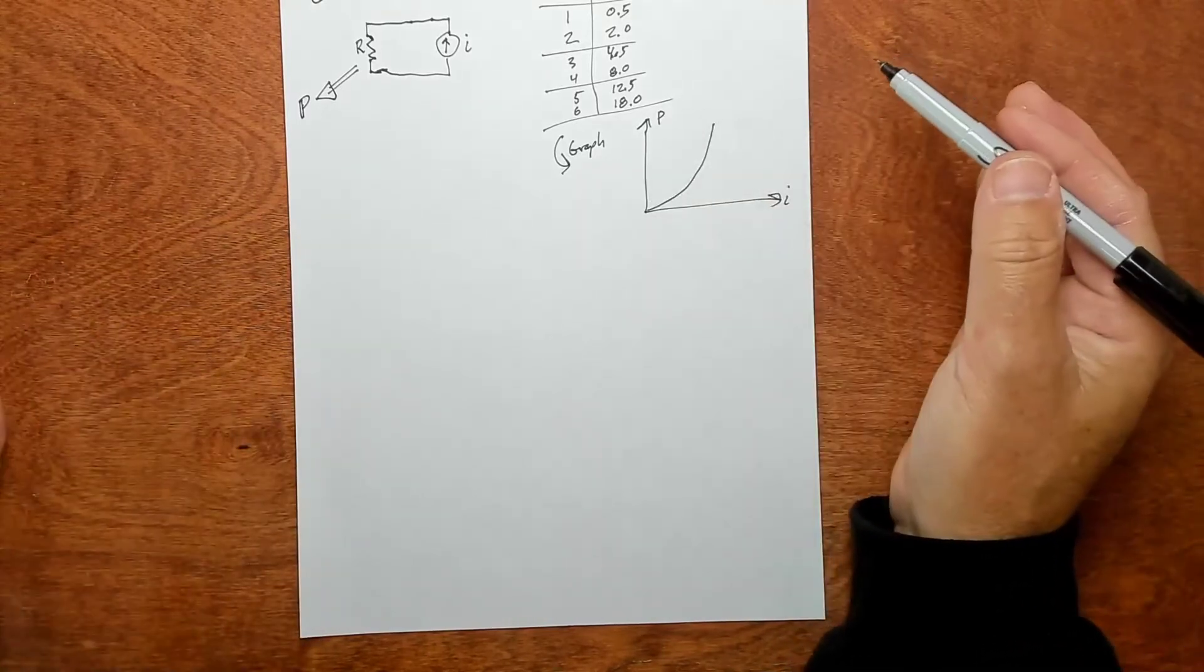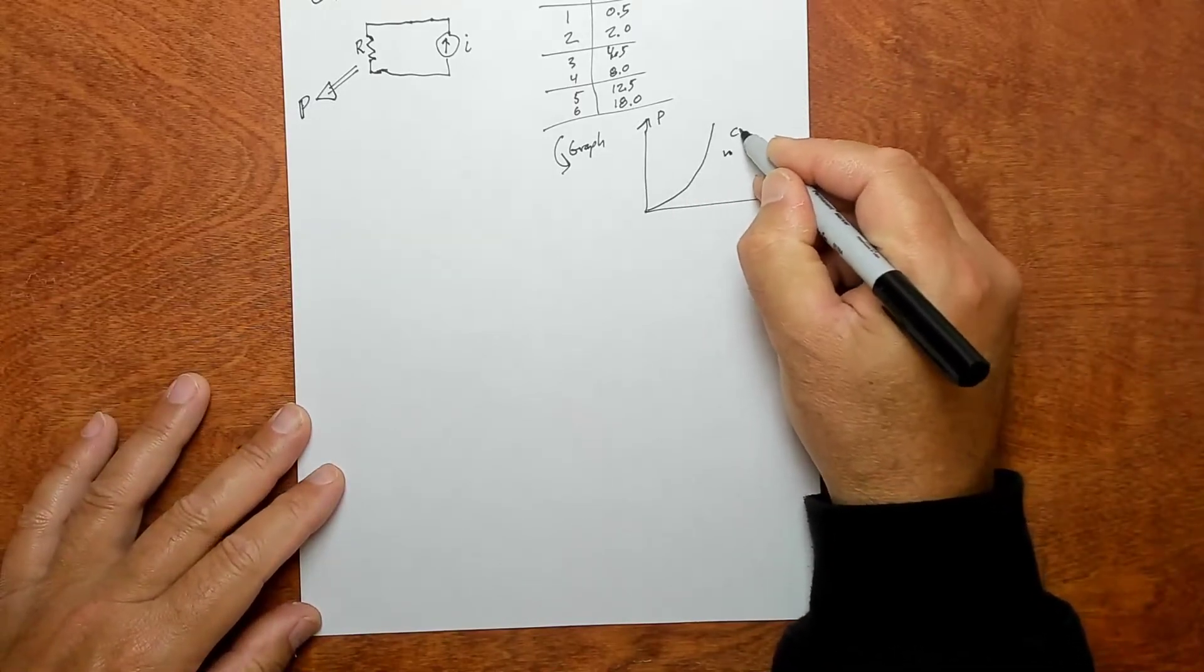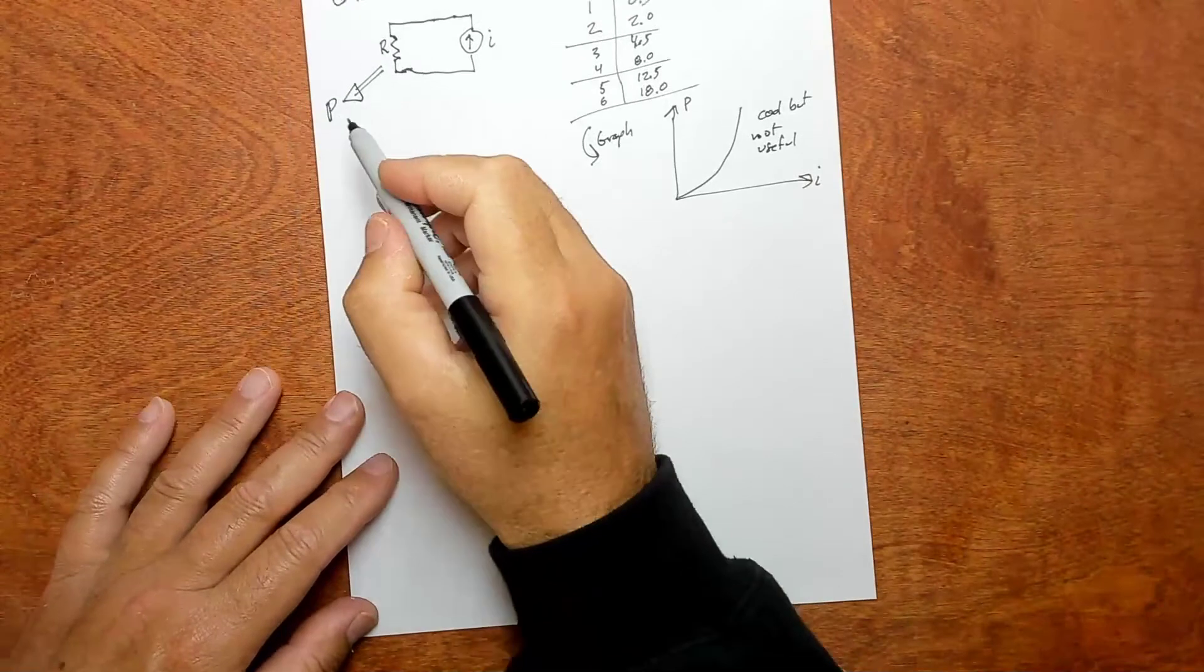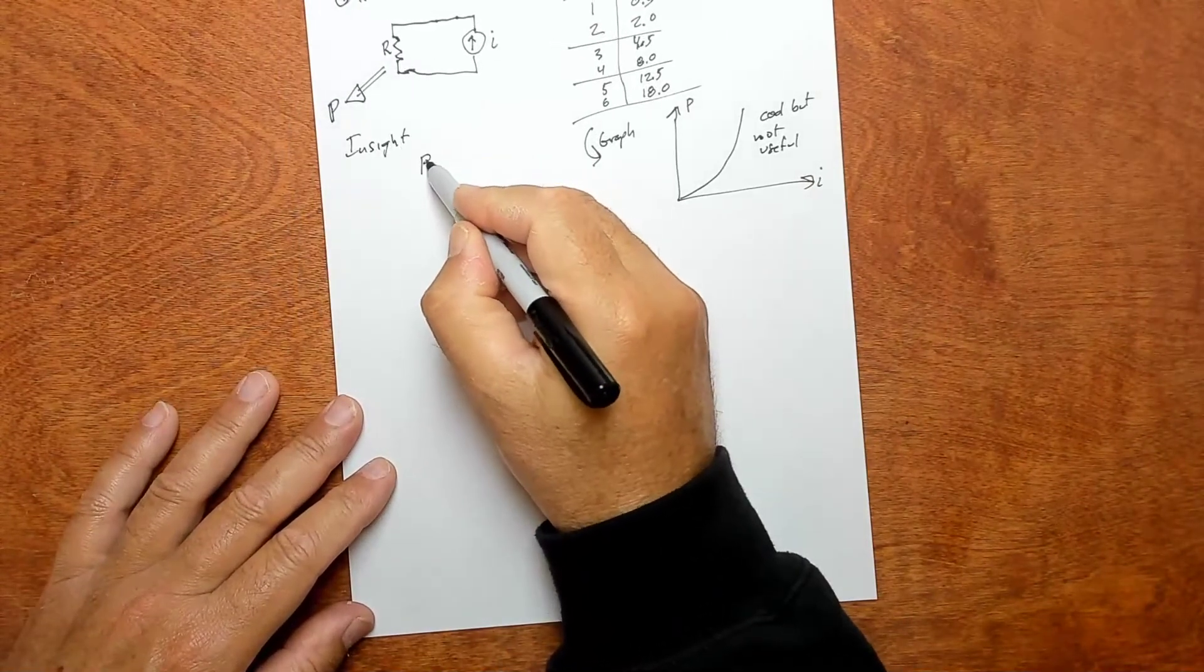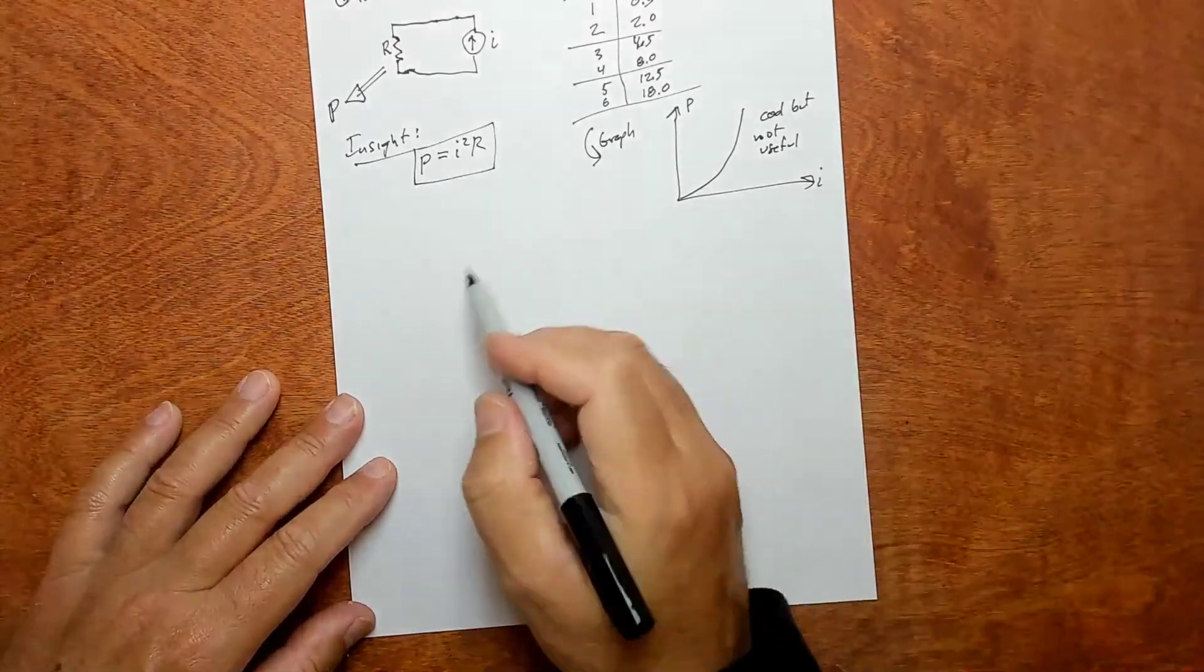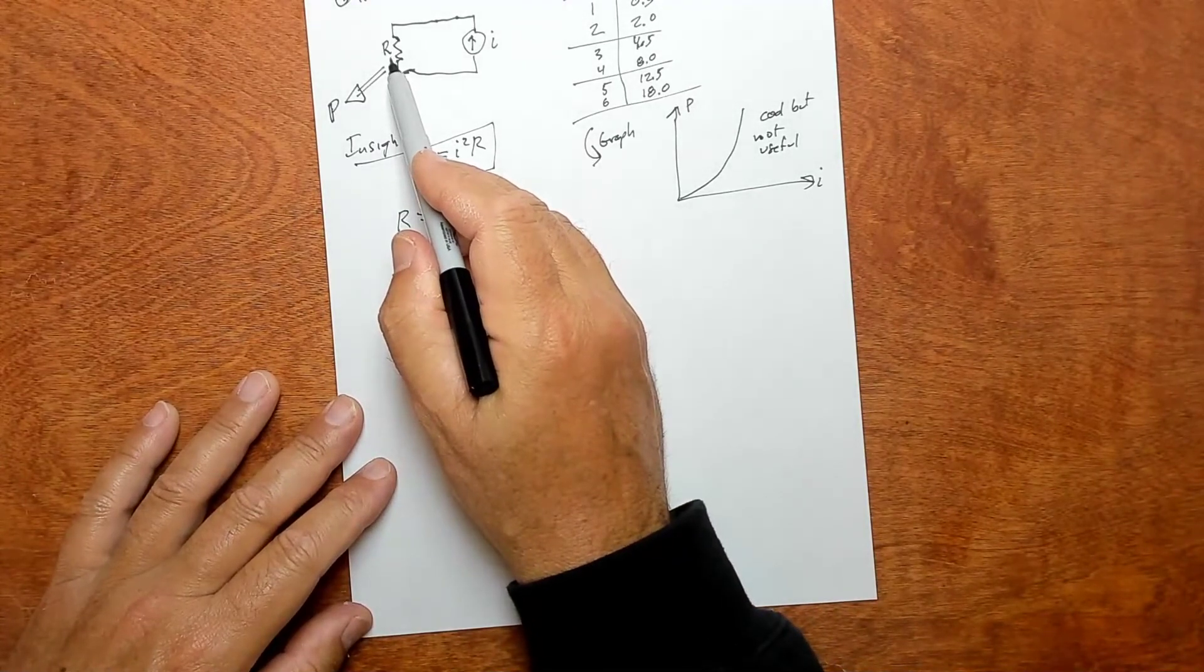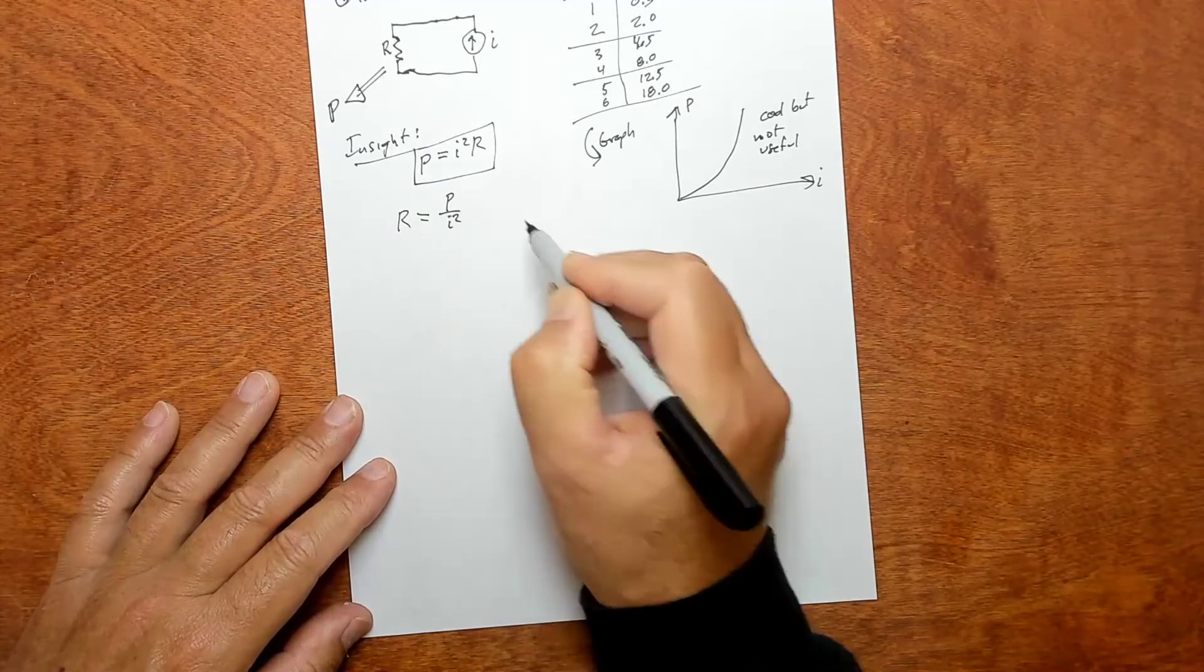Then what can you do? Well, turns out not much. So this is cool but not useful really. Here's the trick: this formula right here, P equals I squared R. That's the insight that helps you solve this. Basically, if you solve for R, remember R is a constant for a resistor.